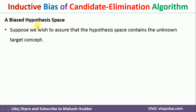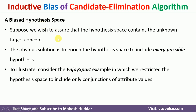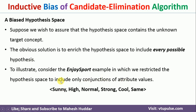Before we go to that conversion, let us first understand how we have written the hypothesis. Let us take the EnjoySport example again. In the previous cases, we considered the conjunction of attributes — for example, sky should be equal to sunny, temperature should be high, humidity should be normal, and so on. When we consider this conjunction of attributes, we get some hypothesis space. It will work in the maximum number of cases, but sometimes the target concept may not be present in that hypothesis space.